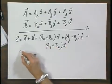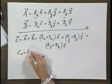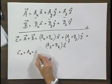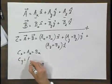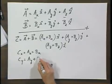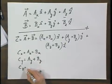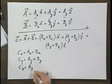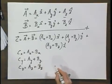In other words, the x component of the vector C equals A of x plus B of x. The y component equals A of y plus B of y. And the z component equals A of z plus B of z.